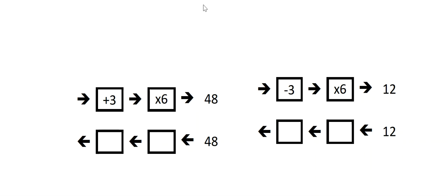What you are told is an input goes into the function machine, you add three, you then multiply by six, and you get the answer 78. Now we're going to use the inverse function machine.